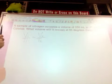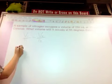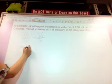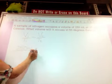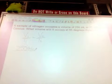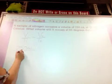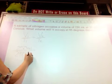I have a sample of nitrogen, occupies a volume of 250, so that should be my V1. So I have 250 milliliters at 25 degrees Celsius. So I have 25 degrees Celsius, but I need to convert that, because that would be my T1, need to convert that to Kelvin. So to do that, I'm going to add 273 to 25. When I do that, that should give me 298. So I have 298 Kelvin.